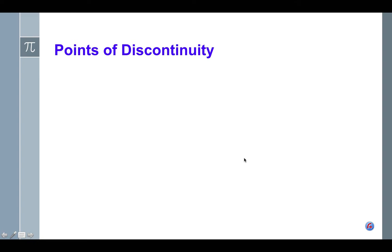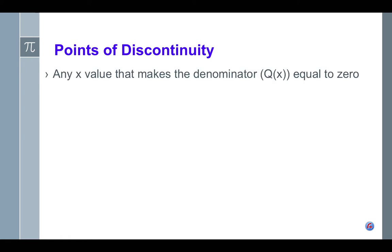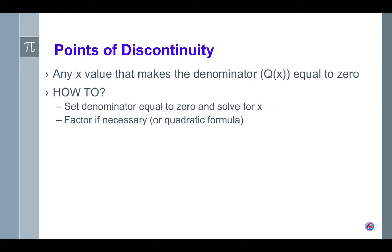First of all, we're going to look at points of discontinuity. I'm going to be going through and defining these things before we get to the actual examples. The point of discontinuity is any x value that makes the denominator q of x equal to zero. We're going to do this by looking strictly at the denominator, setting it equal to zero, and solving for x. If necessary, we're going to be factoring or using the quadratic formula if it's a quadratic in the denominator — all prior knowledge that we already know how to do.